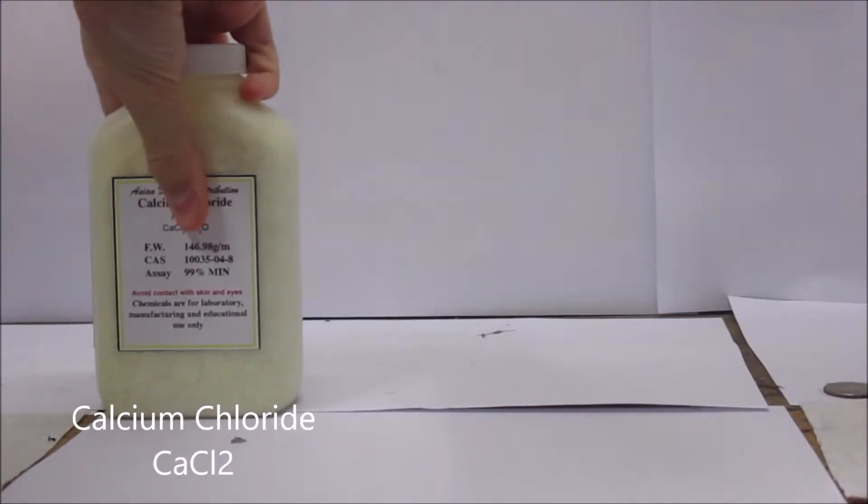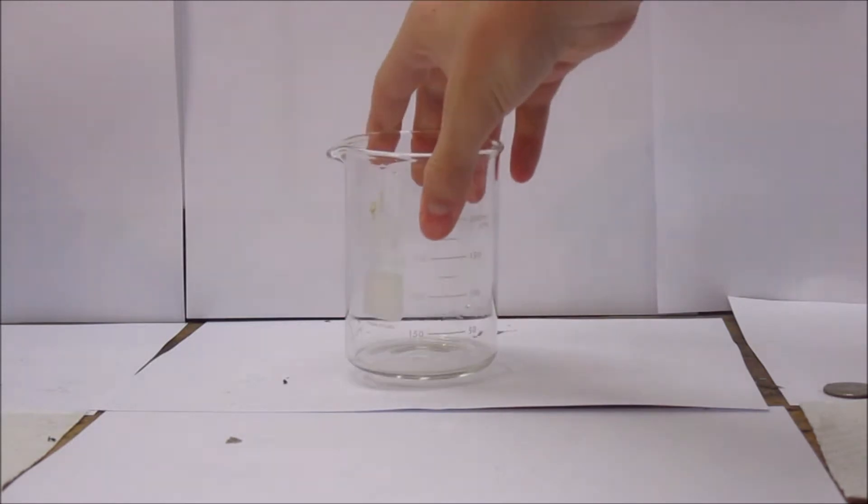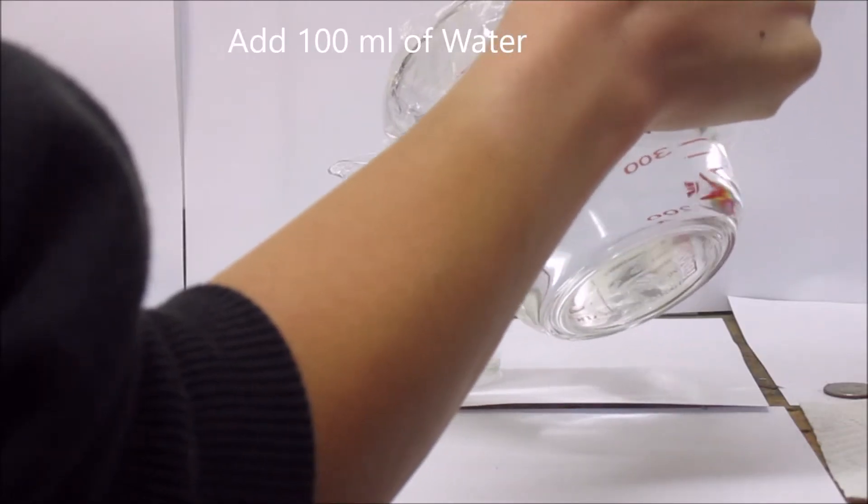To make the calcium carbonate, we will need calcium chloride and baking soda. To start, I got a beaker, then filled it up with 100 ml of water.